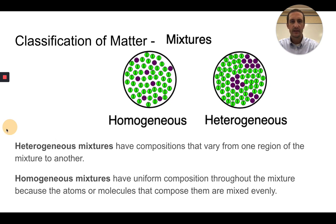A homogeneous mixture has uniform composition throughout the mixture because the atoms or molecules that compose them are evenly mixed. In a homogeneous mixture, the particles are mixed evenly all the way through, whereas in a heterogeneous mixture, there's one part of the mixture where there's a lot of one thing and another part where there's a lot of other things. The mixture is not uniform all the way through.